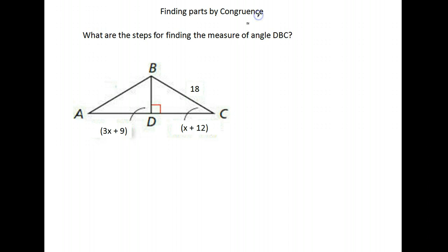Okay, so again, we're given two congruent triangles. This is one of the steps for finding the measure of angle DBC. Okay, so where is angle DBC located?